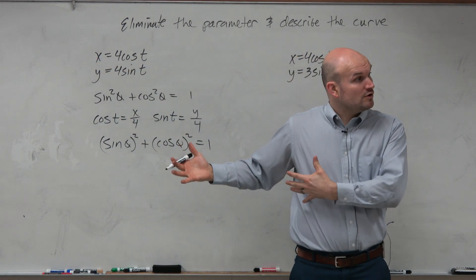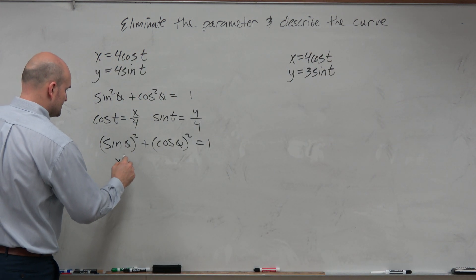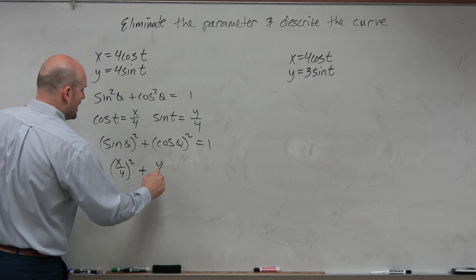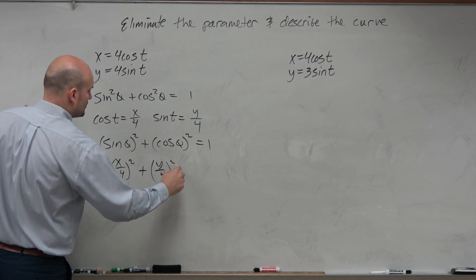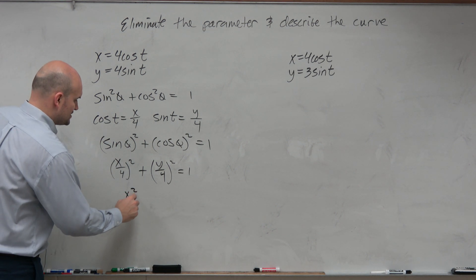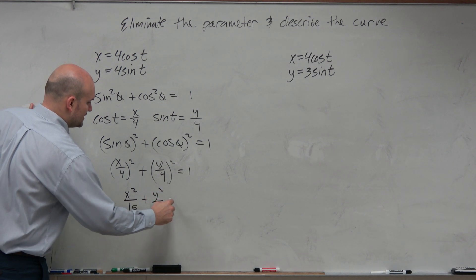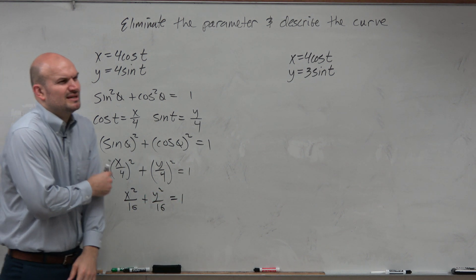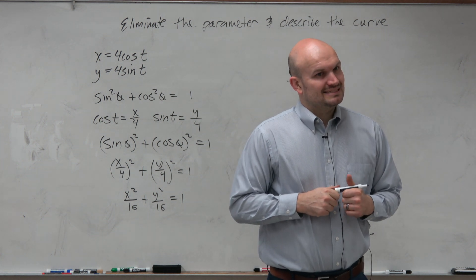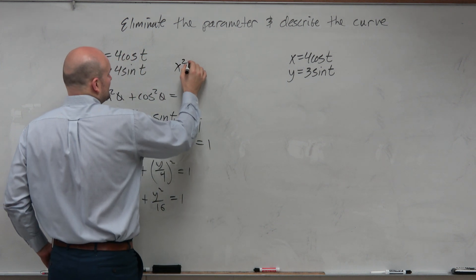So now that we have cosine and sine represented, I basically have x over 4 squared plus y over 4 squared equals 1. And then this gives me x squared over 16 plus y squared over 16 equals 1. Does anybody know what that is the equation of? Not yet. So I was kind of getting ahead of myself. I was writing this. Does anybody know what this is the equation of?